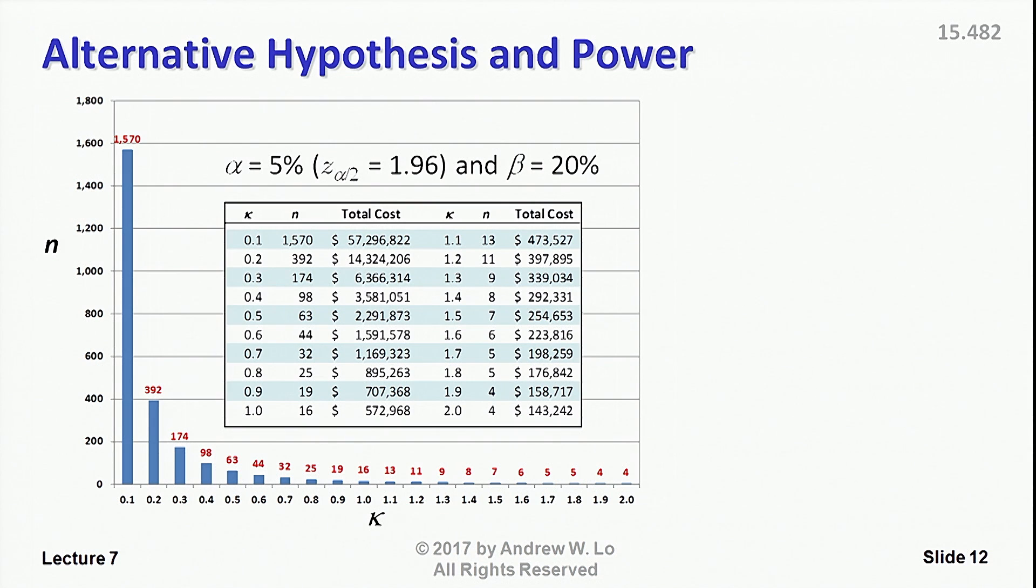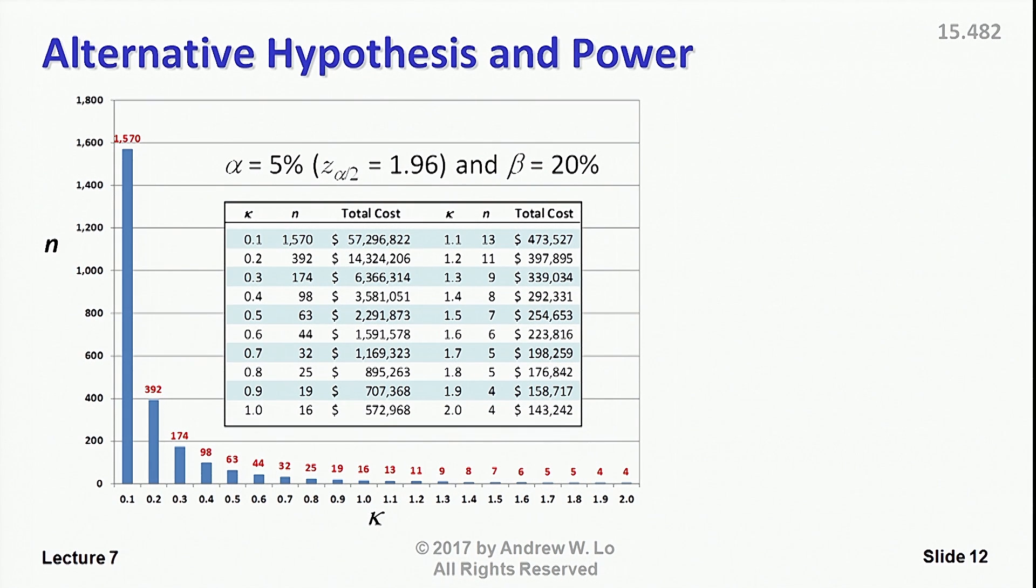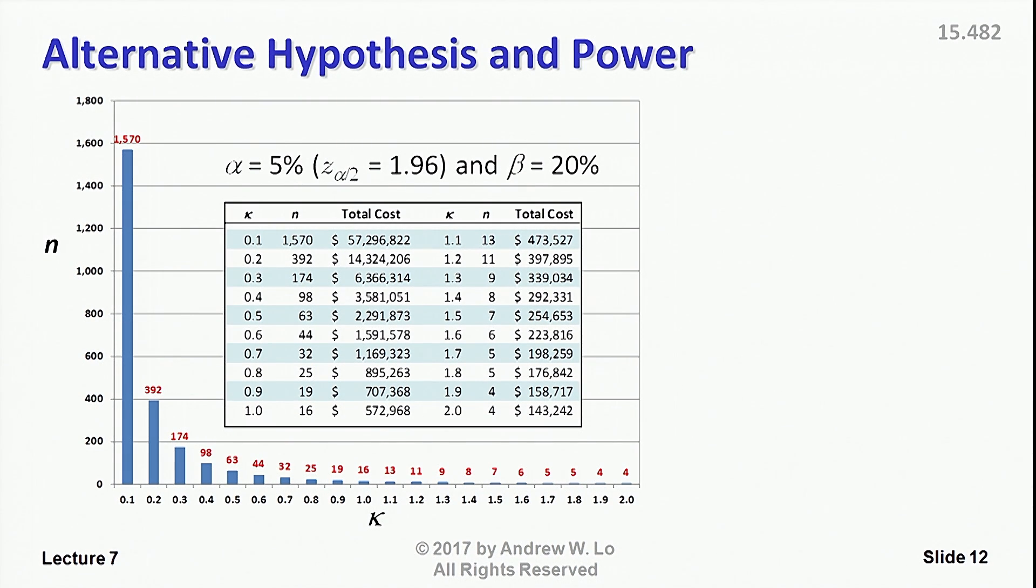If you have a treatment that is two standard deviations away from zero, if you can extend life by two standard deviations, or if you can reduce blood pressure by two standard deviations, or improve kidney function by two standard deviations, then according to this calculation, you only need eight patients. Four in the control group, four in the treatment group, and at a cost of $143,000 per arm, or about $300,000. That's if it's two standard deviations.